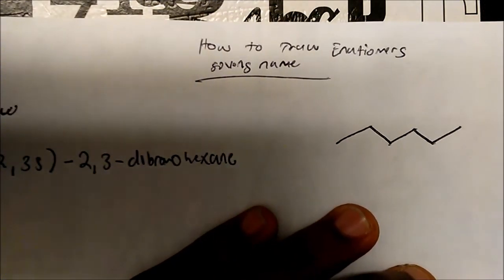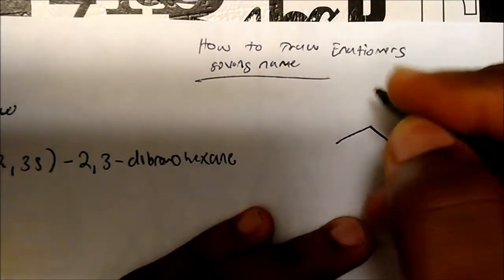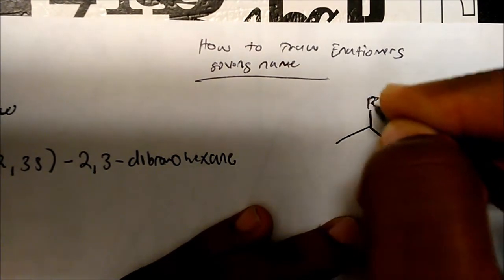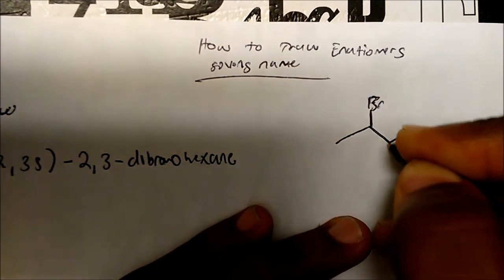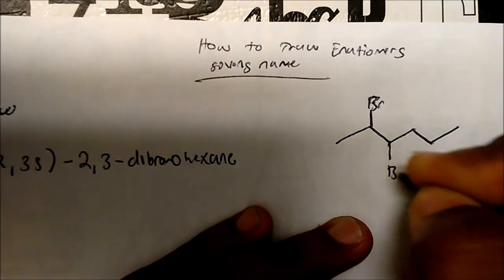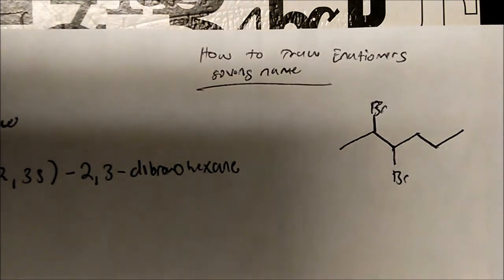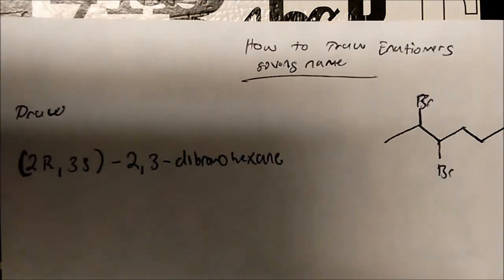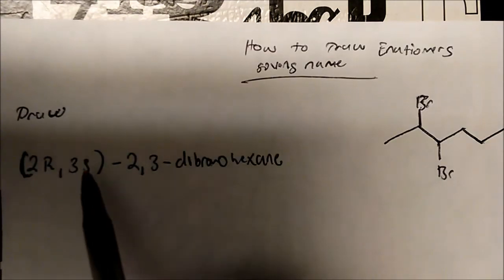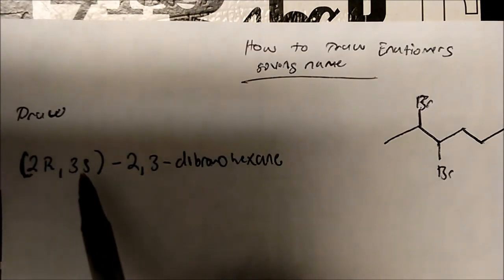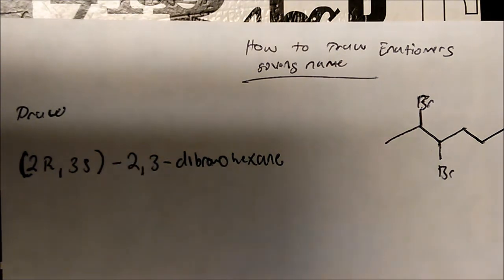Now we have on carbon 2 a bromine, and on carbon 3 a bromine. So the molecule looks something like this, but now we've got to show stereochemistry. So on carbon 2 we have an R configuration, and on carbon 3 we have an S configuration.